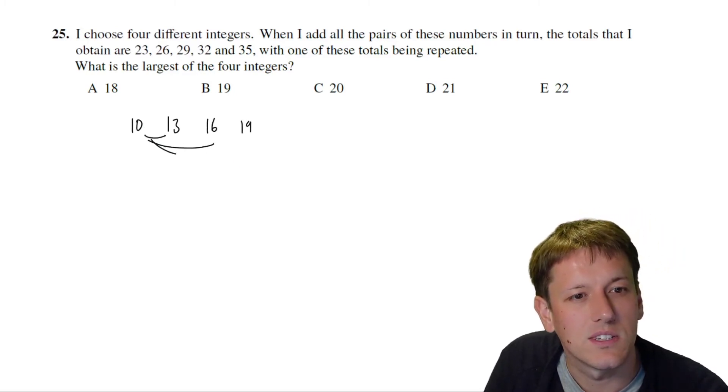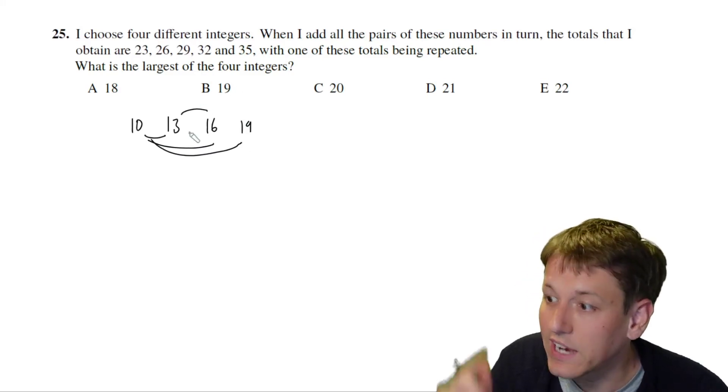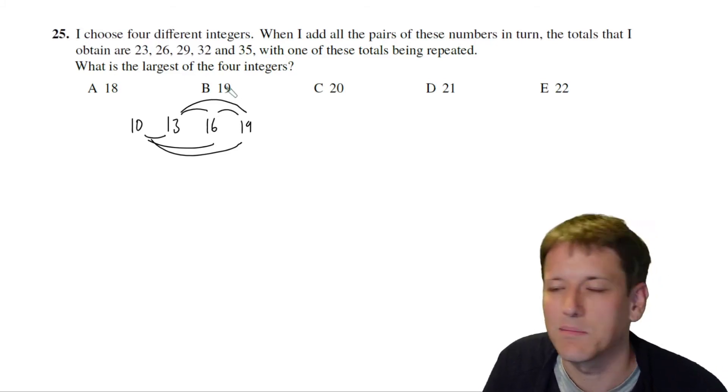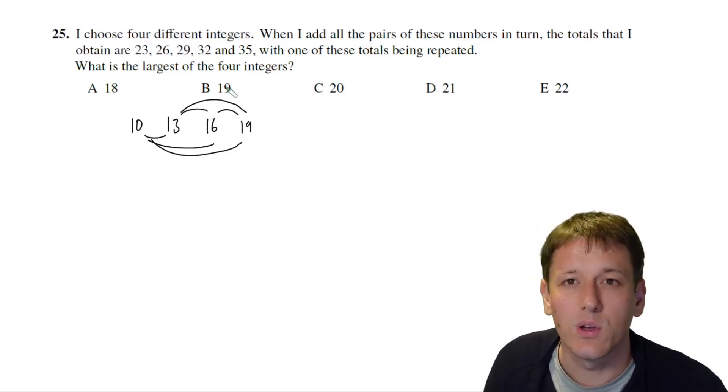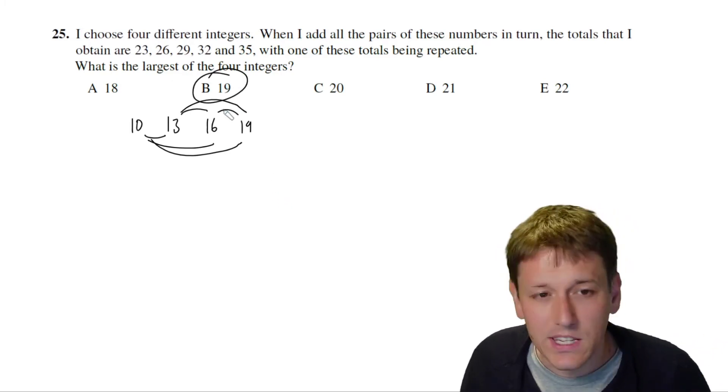And I realize I've actually found the answer here, right? I've got all the totals: 10 plus 13 is 23, 10 plus 16 is 26, 10 plus 19 is 29, 13 plus 16 is 29 and that's the one that's repeated, 13 plus 19 is 32, and 16 plus 19 is 35.